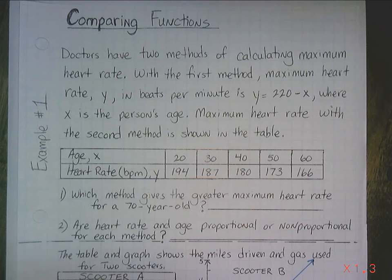Doctors have two methods to calculate maximum heart rate. So they want to know, depending on your age, what should they expect that your maximum heart rate can get to. Because at a certain point, if your heart goes over the maximum heart rate that's expected for the age that you're at, that can lead to serious consequences if not treated.